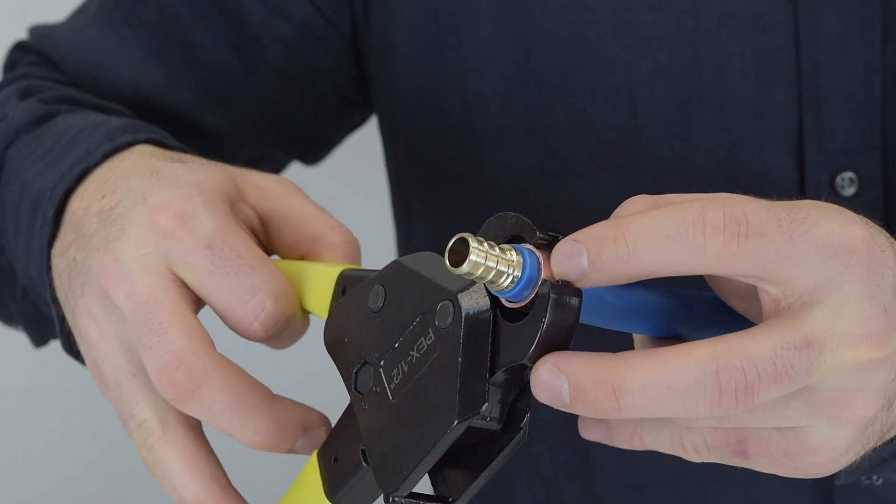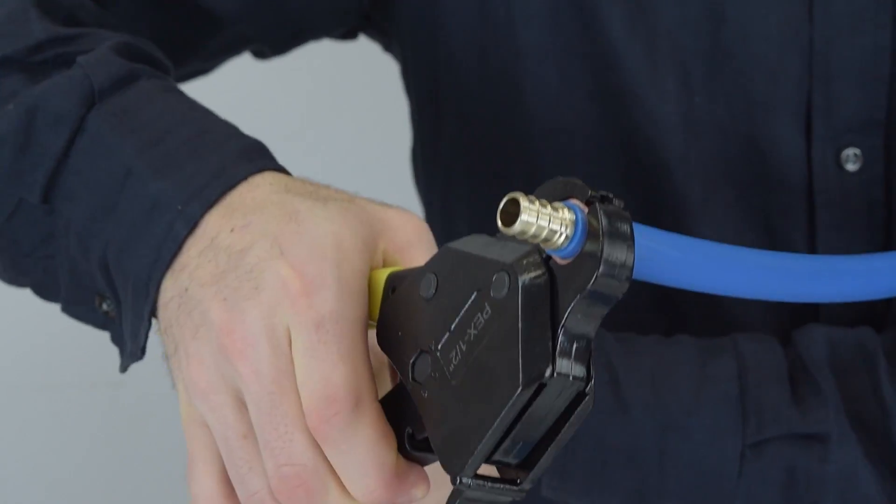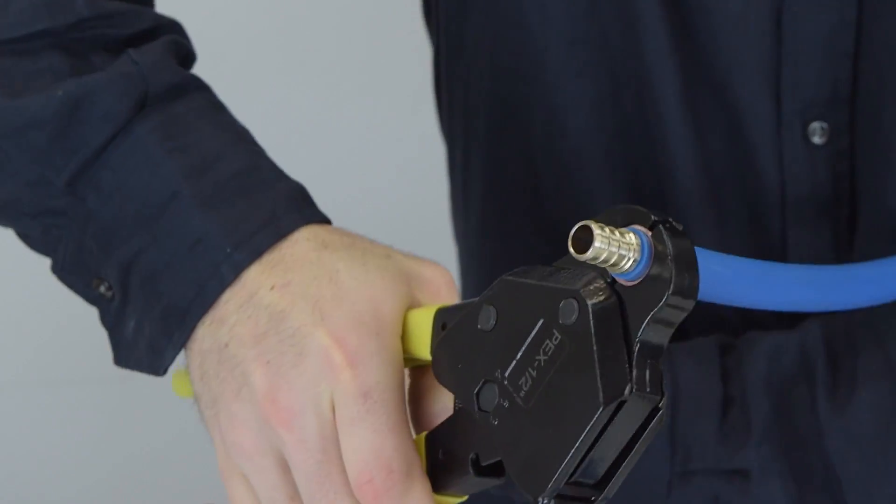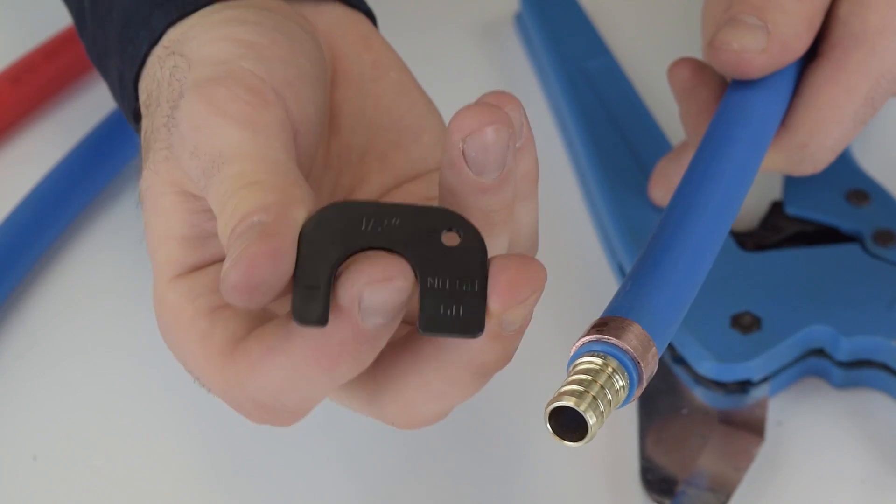Next, you're going to take your crimp tool, place it at 90 degrees, and make your connection.